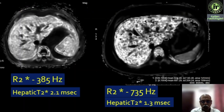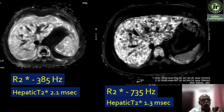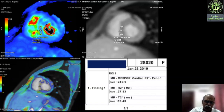From a multi-echo GRE sequence post-processed image, you get both R2-star and PDFF (fat). For example, drawing an ROI on the liver gives R2-star of 385; T2-star = 1000/385 = 2.5 milliseconds. In another example, R2-star is 735 and hepatic T2-star = 1000/735 = 1.3 milliseconds. Softwares such as ReadyView in GE, Dixon Quant or LiverLab in Philips, and LiverHisto in Siemens are available. On the advanced workstation software, you can even draw on the myocardium to get T2-star and R2-star values for the heart.